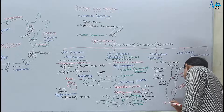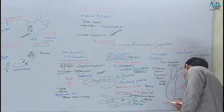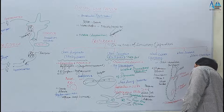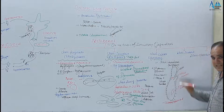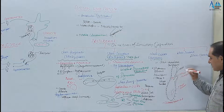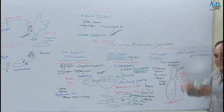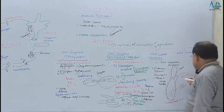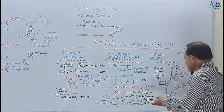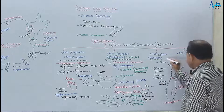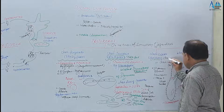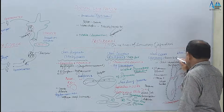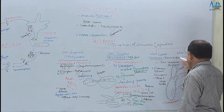Paramecium mein macronucleus metabolism control karta hai aur micronucleus reproduction mein role karta hai. Cilia eyelashes-like structures hain jo flicker movement mein jaati hain, jis wajah se yeh medium mein swim karte hain. By nature wise yeh parasites bhi ho sakte hain aur free-living bhi.